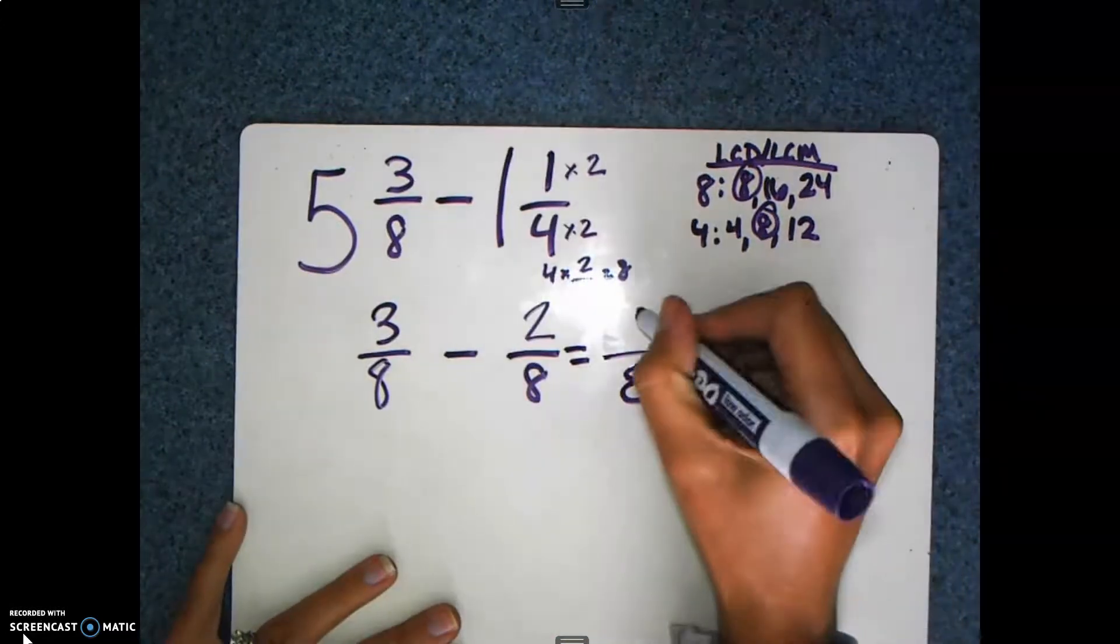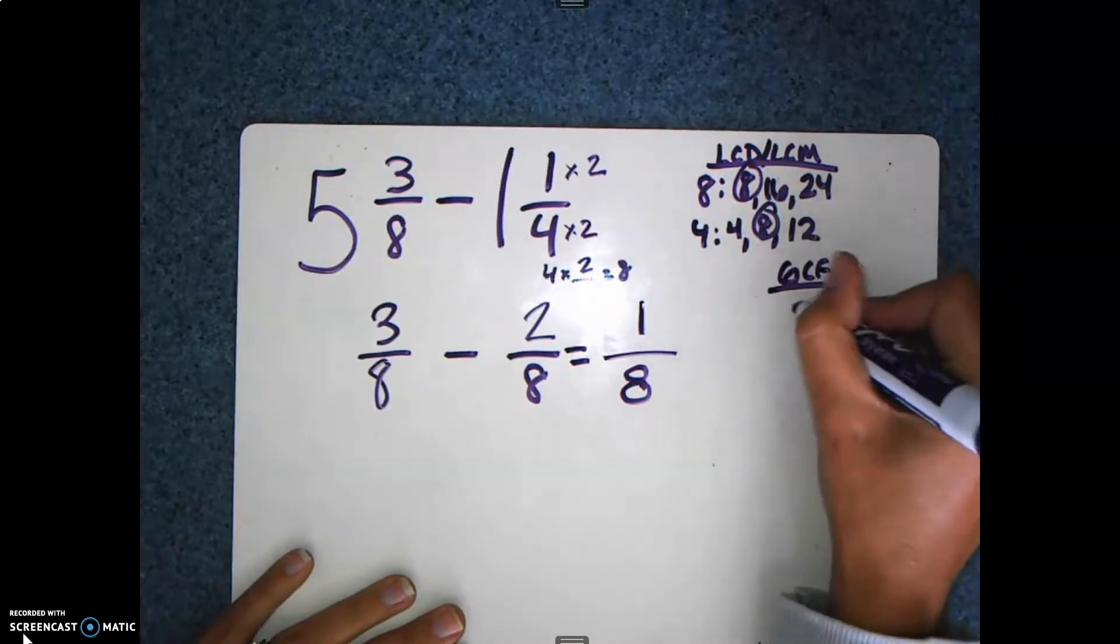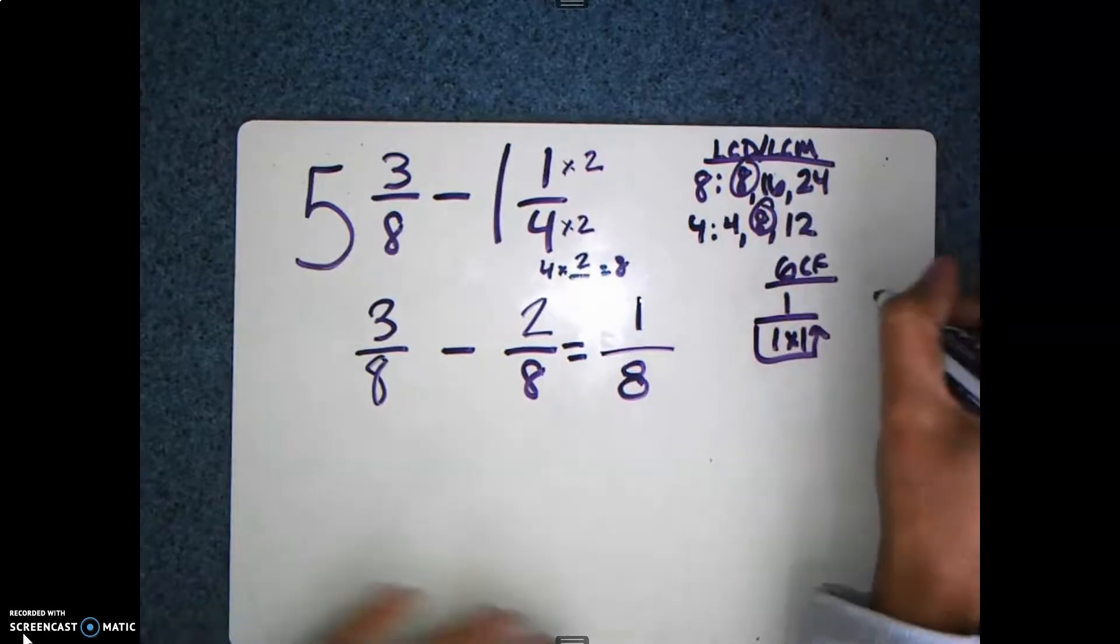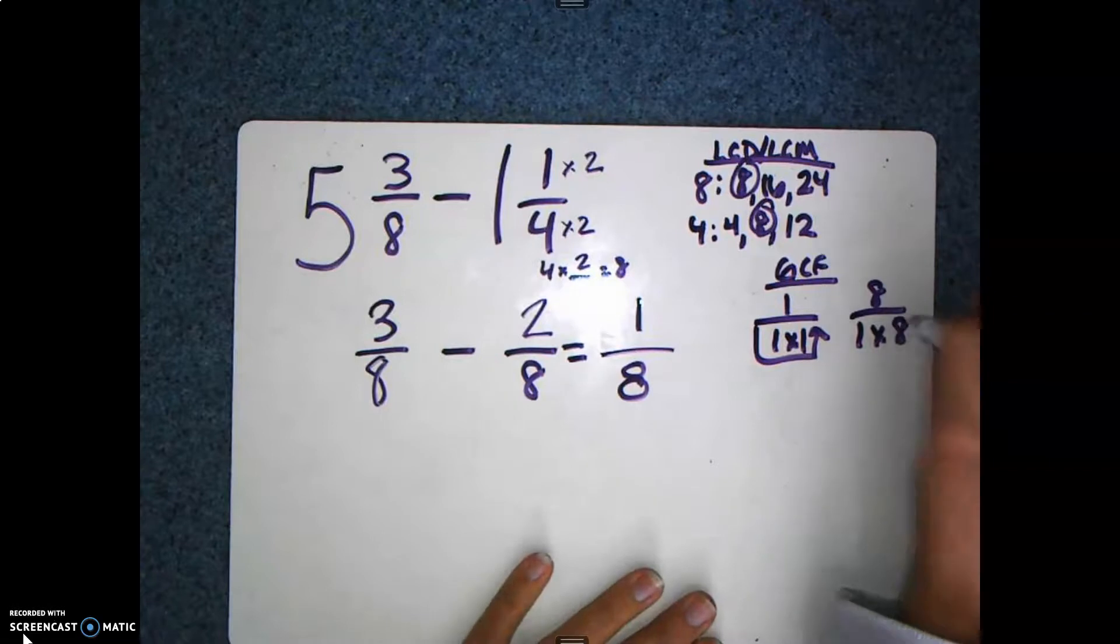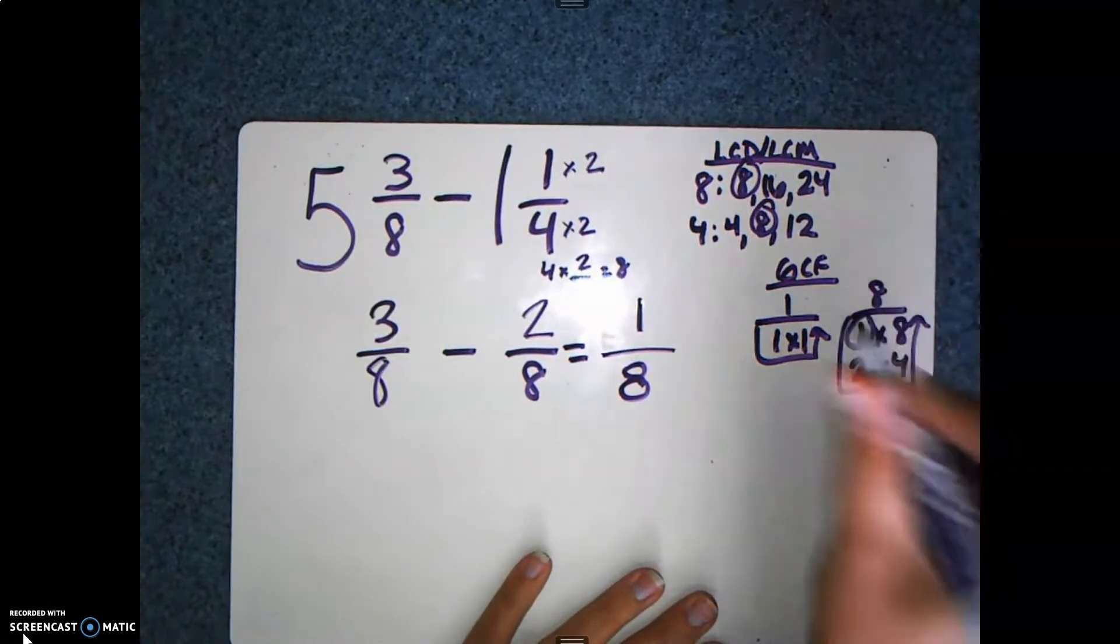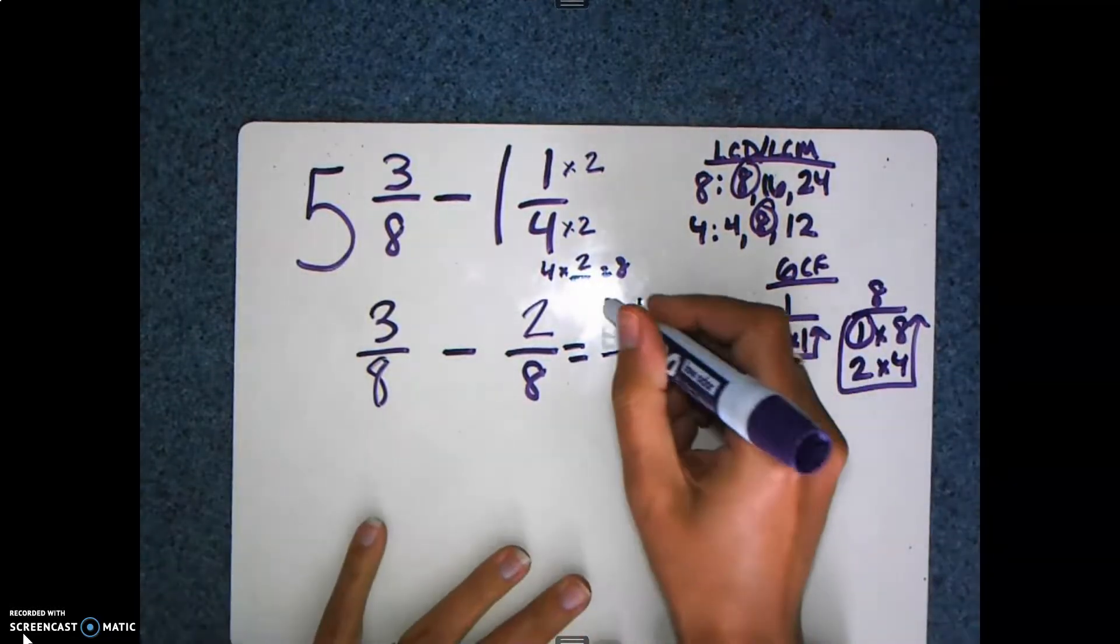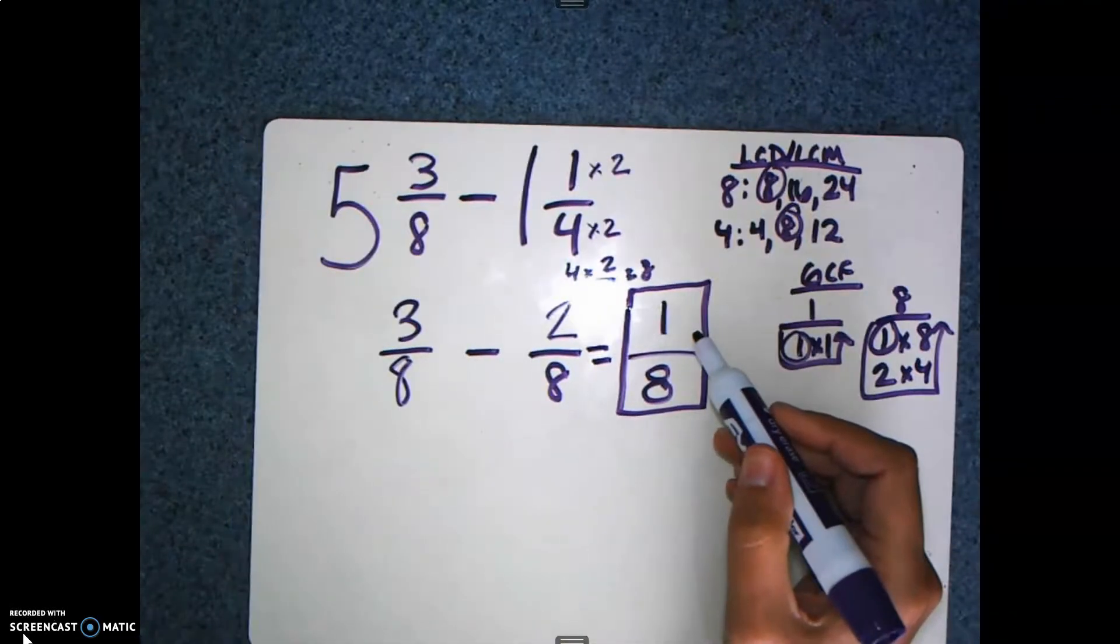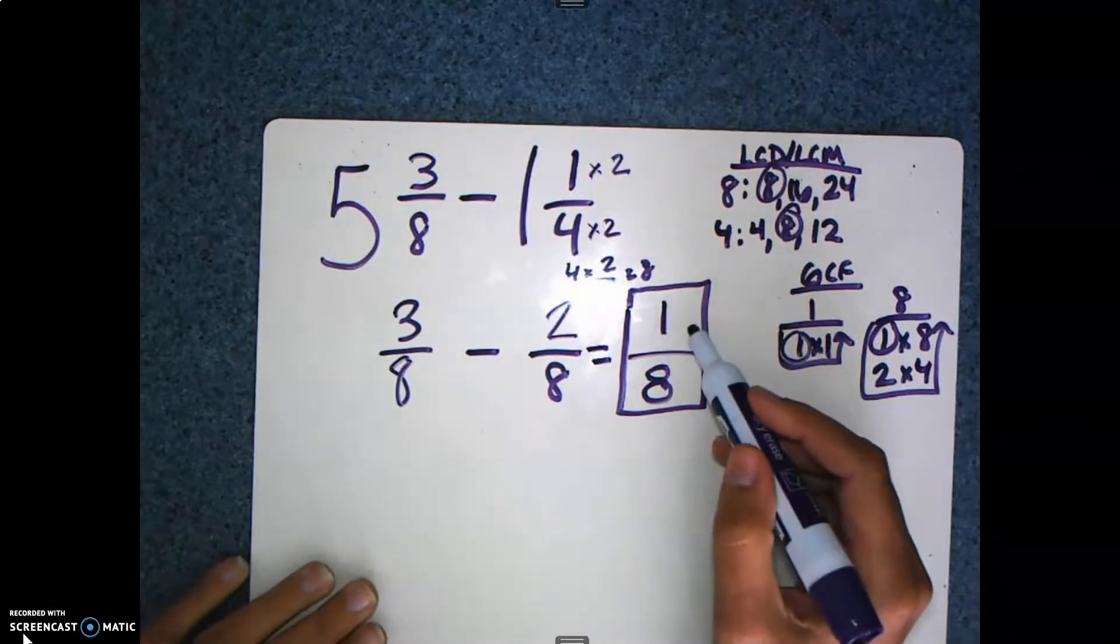There is no simplifying, no reducing that I need to do. Because when you look at greatest common factor for 1, you have 1 times 1. And your factors for 8 are 1 times 8 and 2 times 4. And the only factor they have in common is 1. Now this is a unit fraction. If you ever have a unit fraction, it is already reduced and simplified as far as it can go. So here I have ⅛.